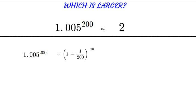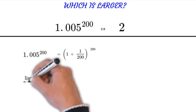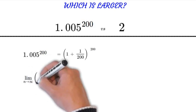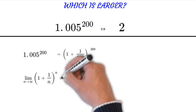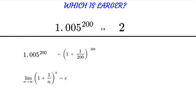Now that we have rewritten it we can recognize something about this equation and we can use a limit. When the limit of n approaches infinity, 1 plus 1 over n to the nth power is equal to e.